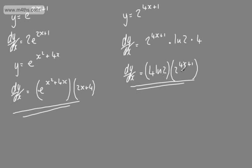Don't get caught up trying to blend these two and make some new expression — just leave it as it is. So if we had y is equal to 3 to the power of x squared minus x plus 1 and wanted the derivative, we could say y is equal to 3 to the u, where u is x squared minus x plus 1.